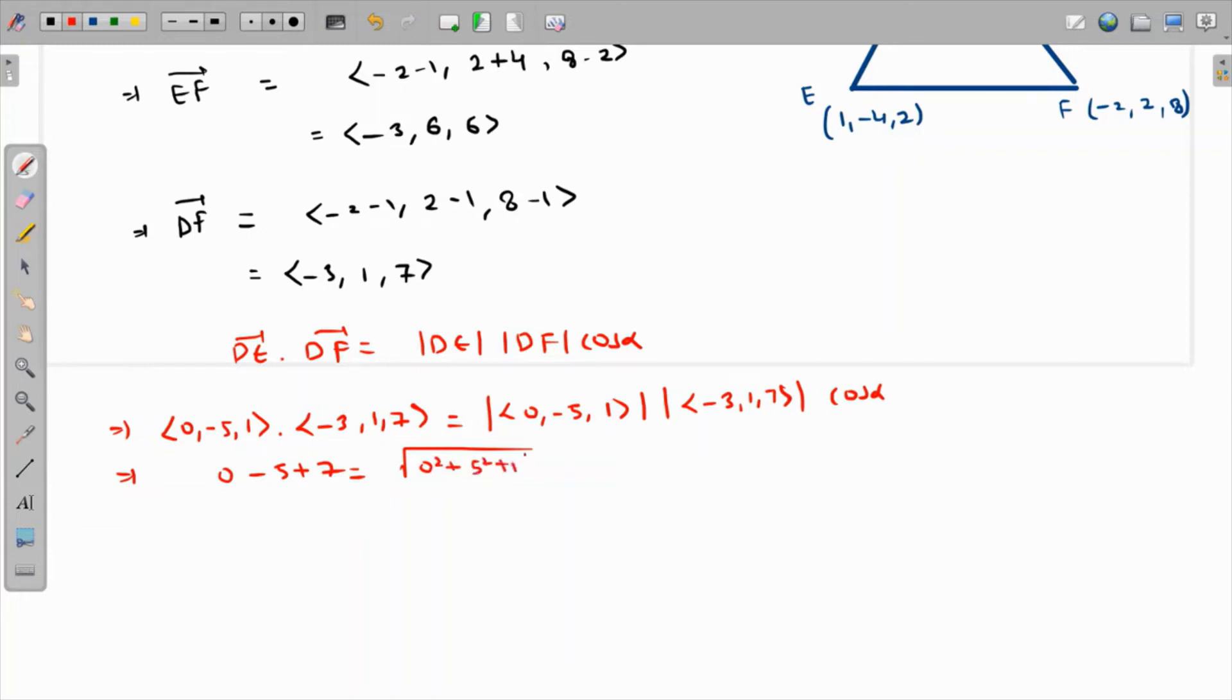This will be root of 3 squared plus 1 squared plus 7 squared and cosine of alpha. This becomes 2 equals root of 26, this becomes root of 49 plus 10 which is 59, times cos of alpha.